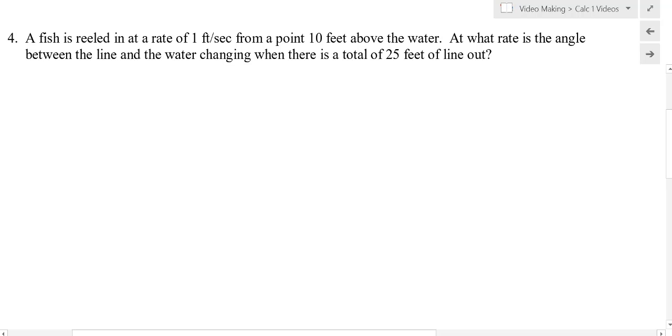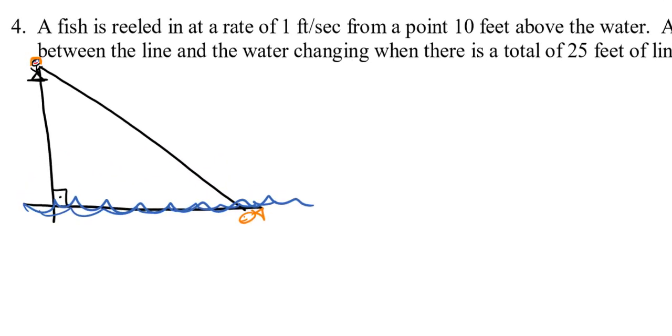Number four says a fish is reeled in at a rate of one foot per second from a point 10 feet above the water. At what rate is the angle between the line and the water changing when there is a total of 25 feet of line out? So the first thing I would encourage you to do is draw the situation. So here's my amazing artistry here.